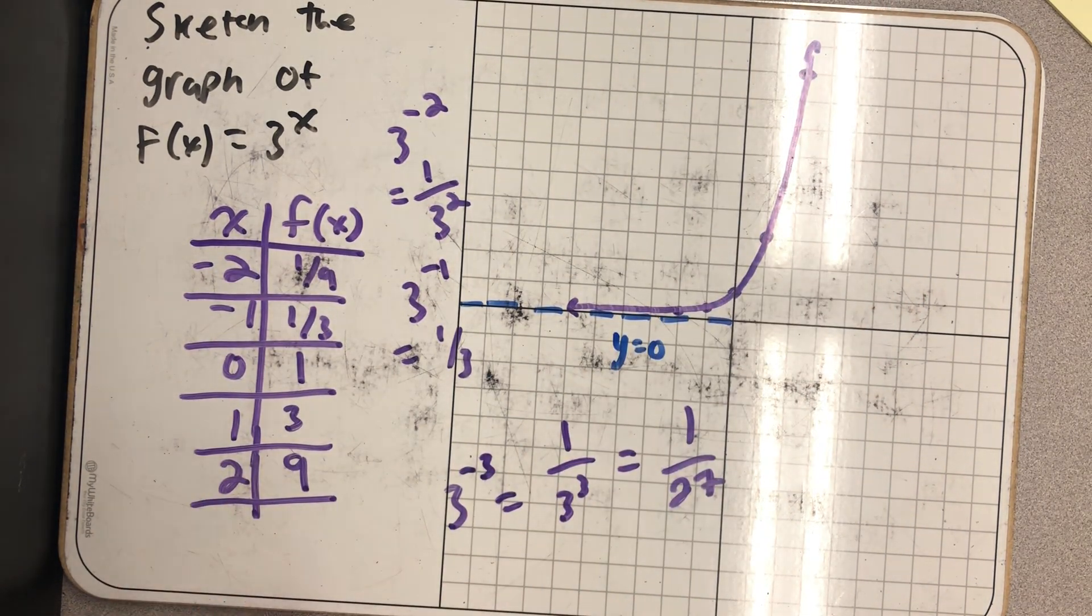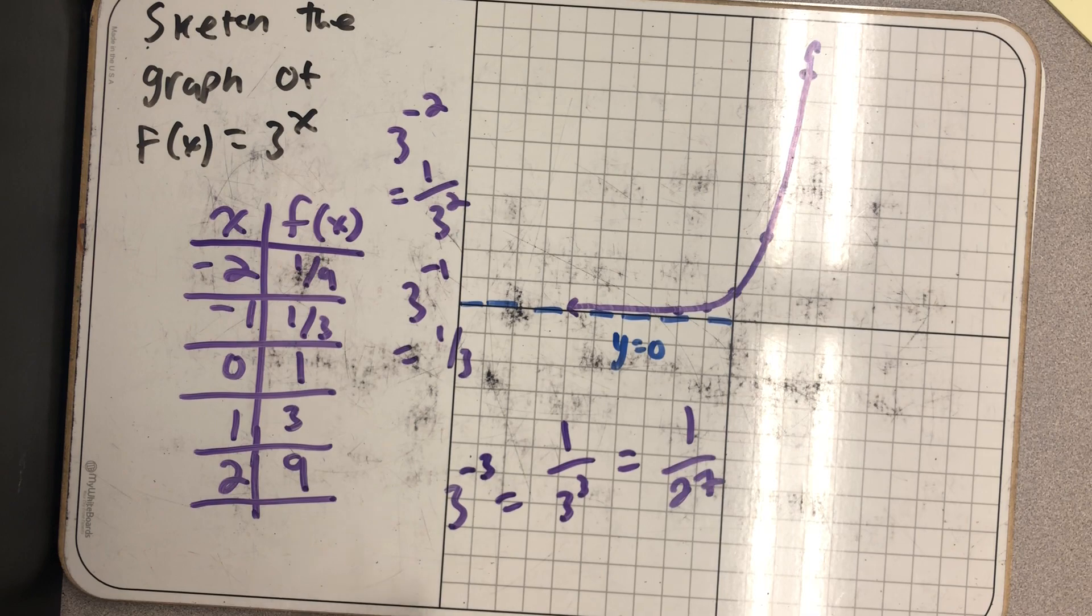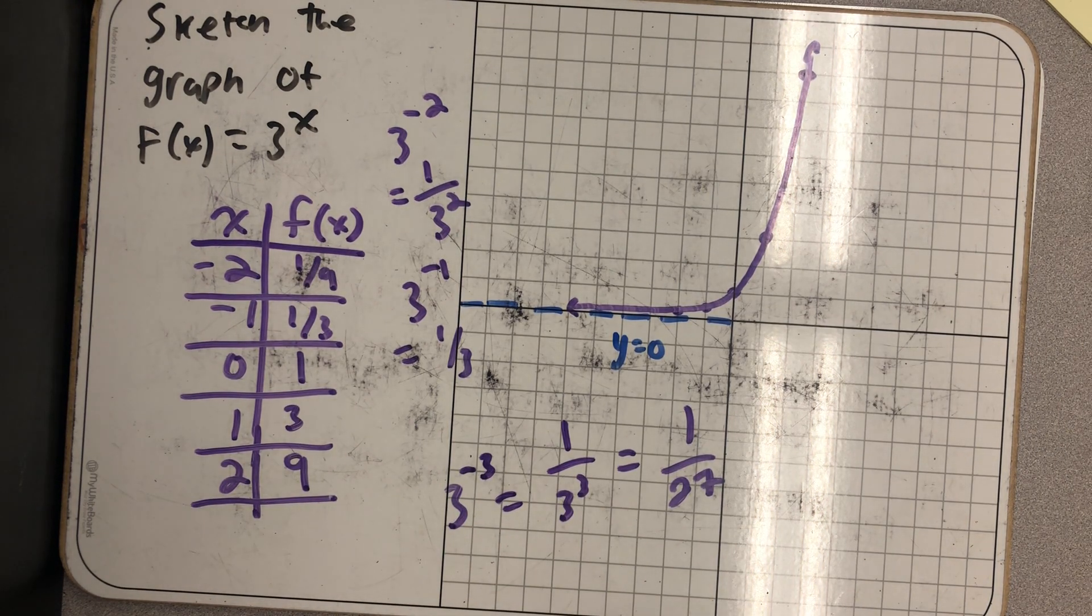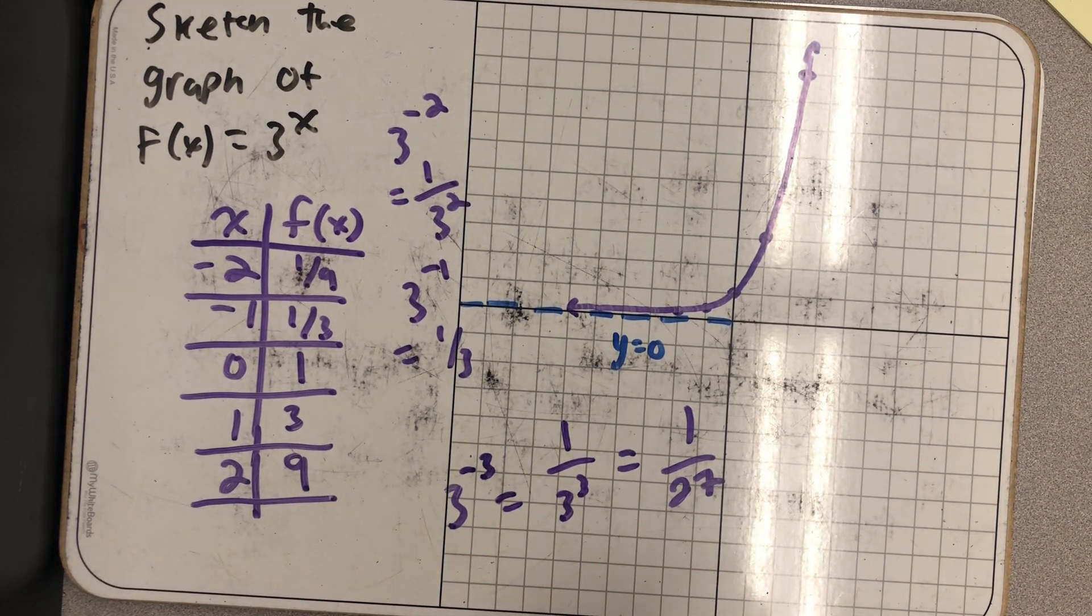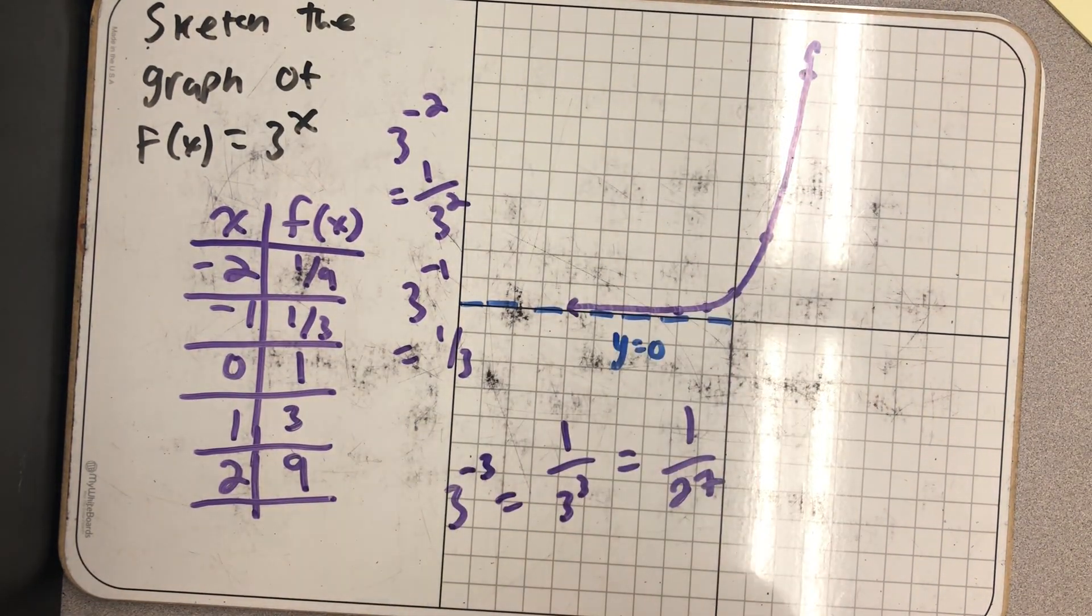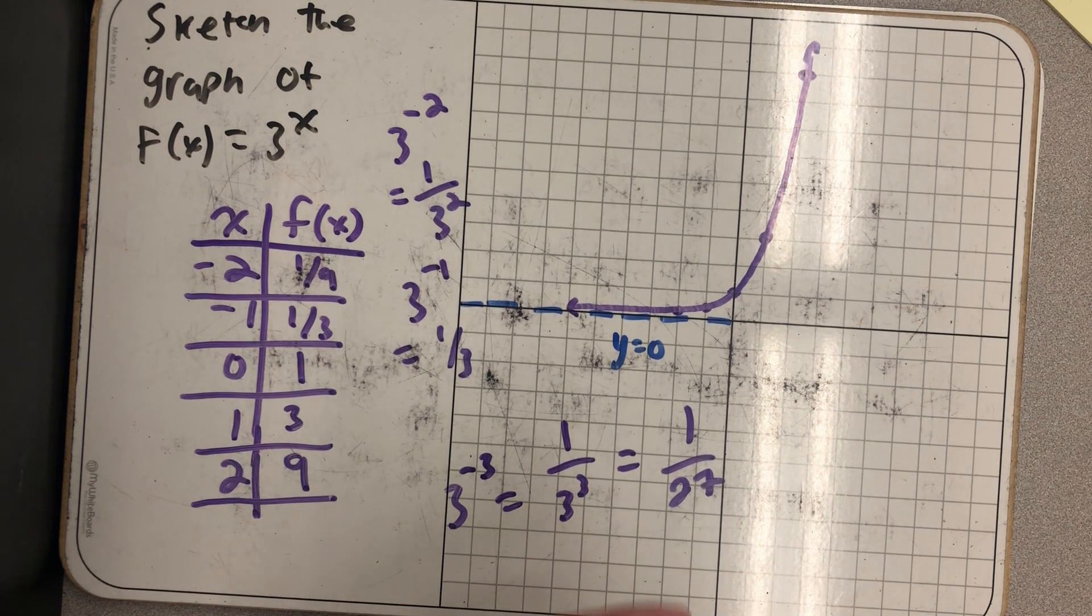On the right-hand side, I just keep getting larger and larger quantities: 3, 9, 27, 81 by the time I get to 4, 243. After that, this is what we call exponential growth. It grows very steeply, very fast.